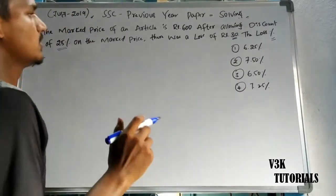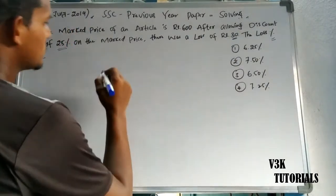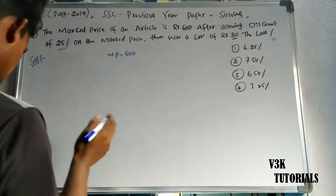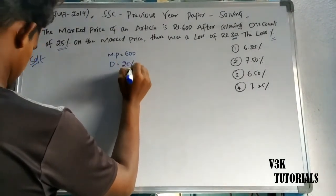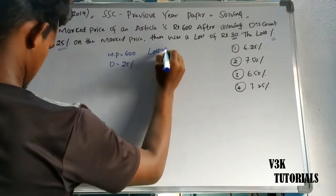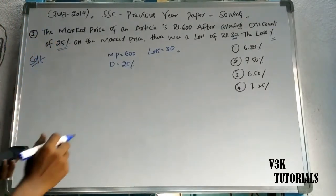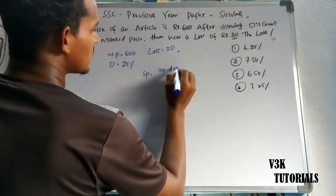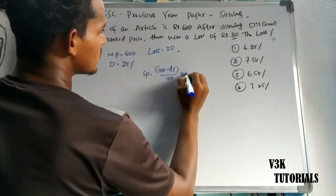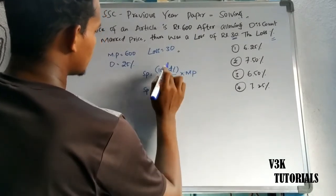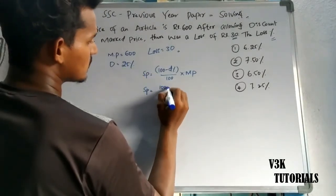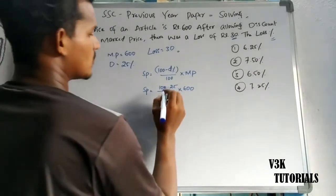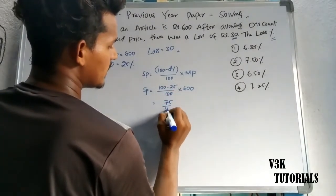The market price equals 600 rupees and the discount is 25%. The selling price formula is: selling price equals (100 minus discount percent) by 100 into market price. So selling price equals (100 minus 25) by 100 into 600, which is 75 by 100 into 600.